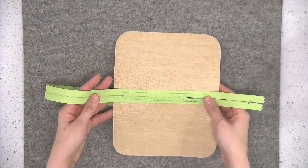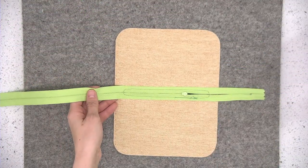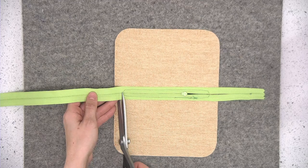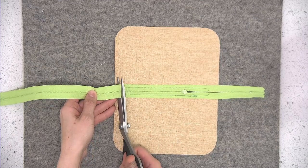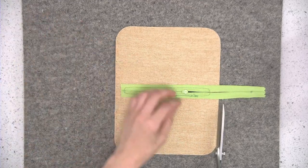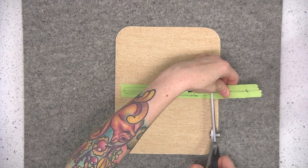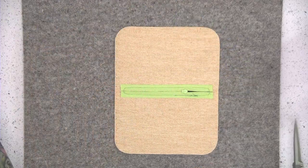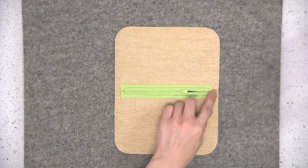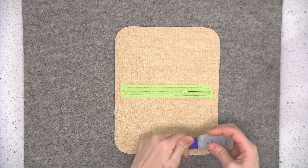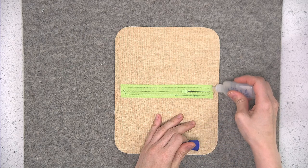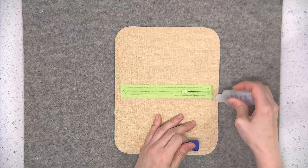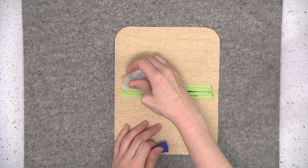Now we're going to flip to the wrong side of the zipper and trim the zipper to within about a quarter of an inch of the stitching line on either side. If you prefer to do so, you can use a bit of seam sealant to reinforce those clipped ends. That just prevents the zipper from fraying.